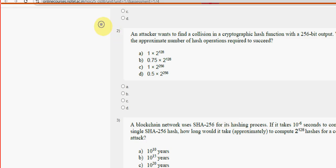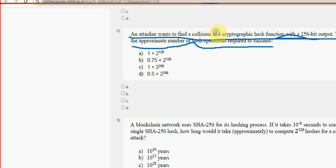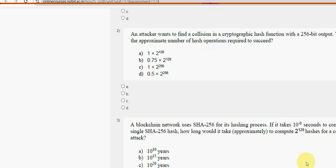Second question: an attacker wants to find a collision in a cryptographic hash function with a 256-bit output. What is the approximate number of hash operations required to succeed? For the second question, the probable answer is Option A — 2^128. Mark Option A.